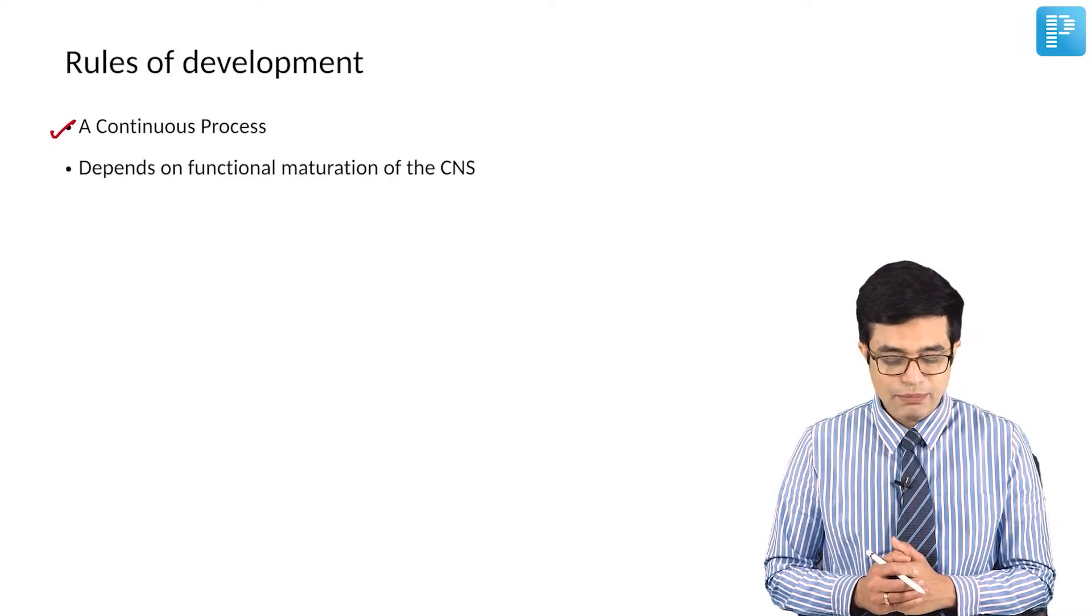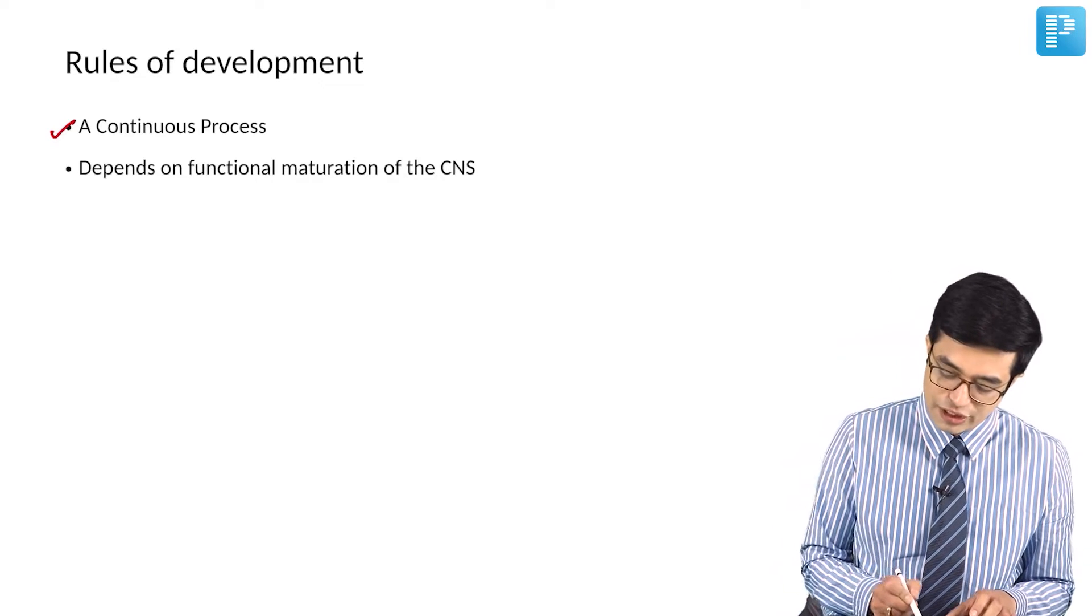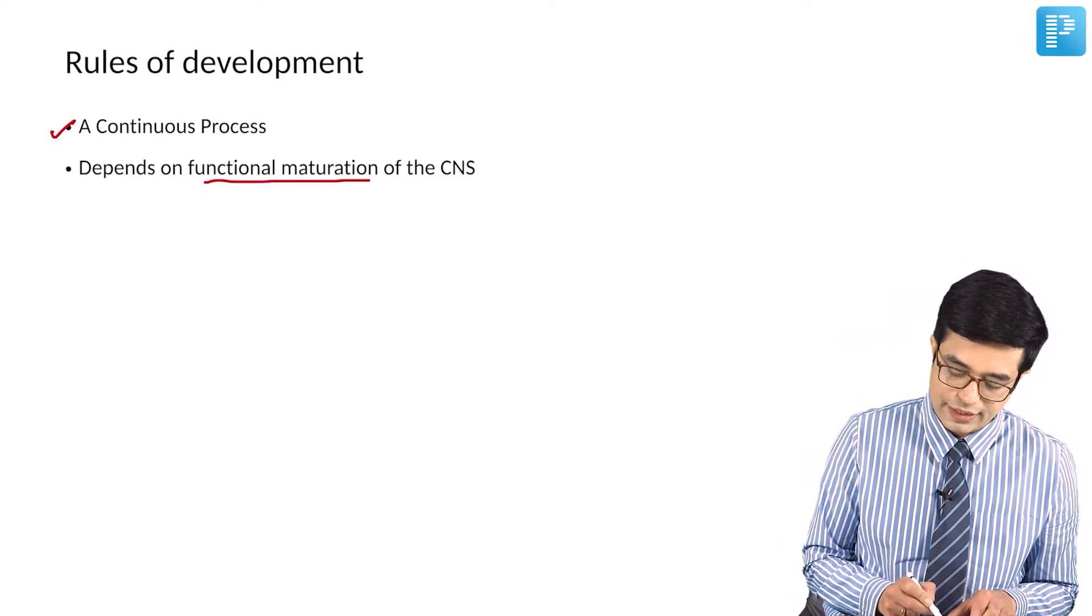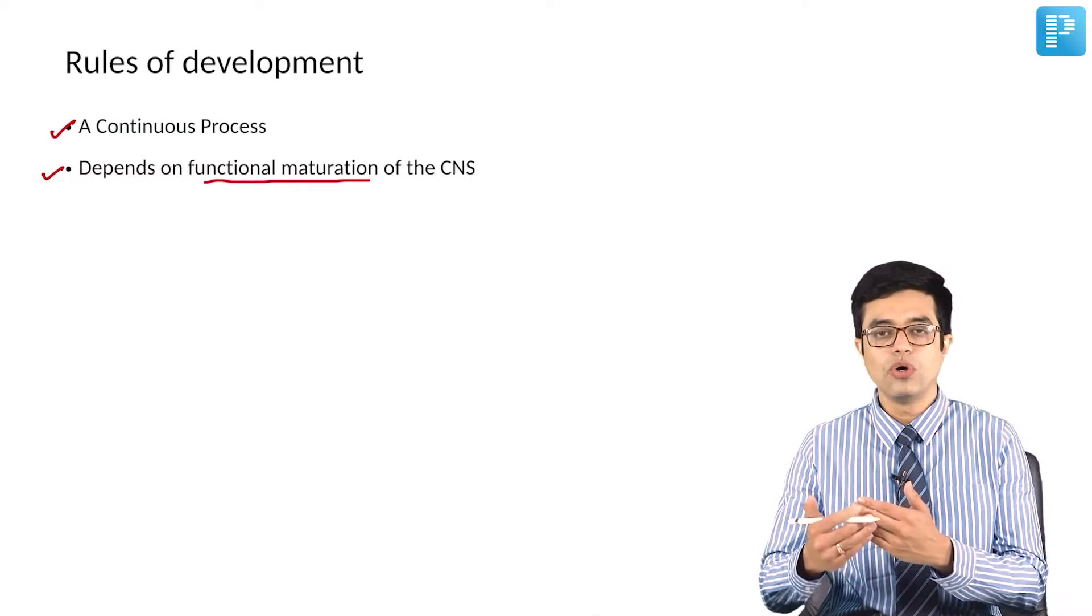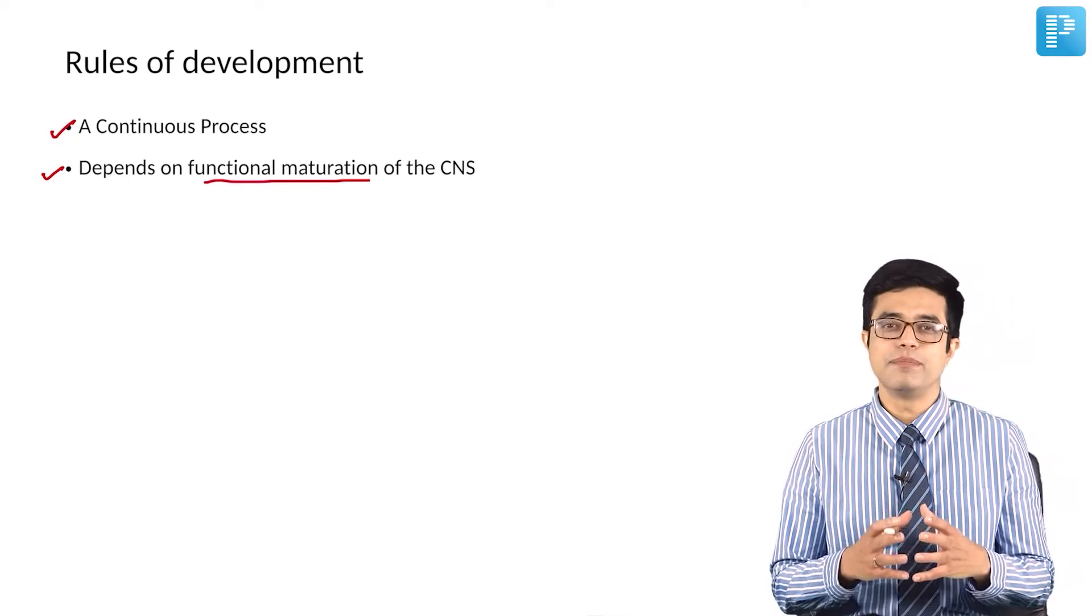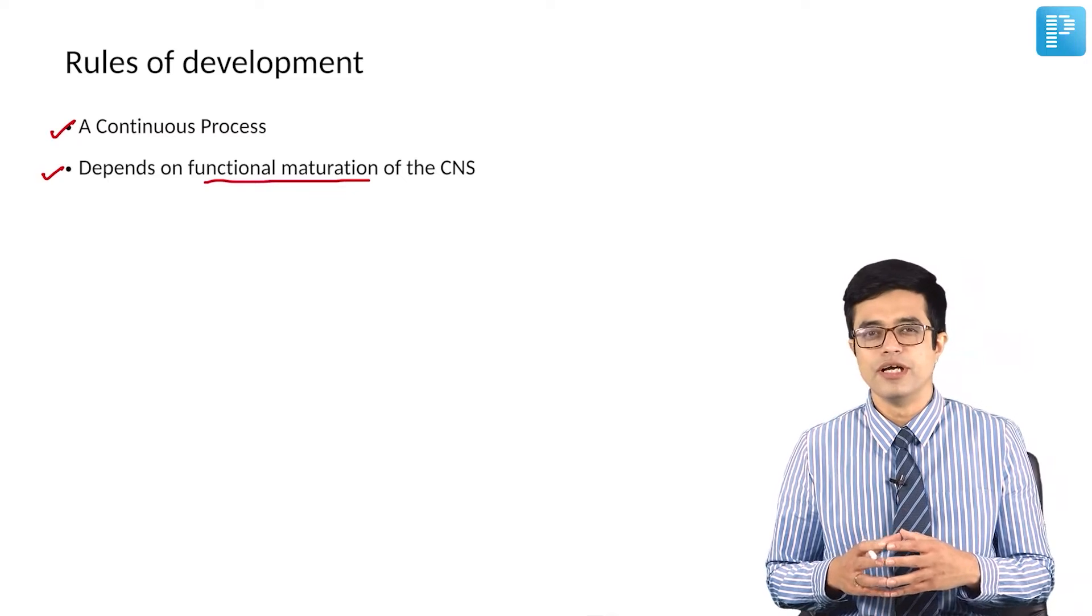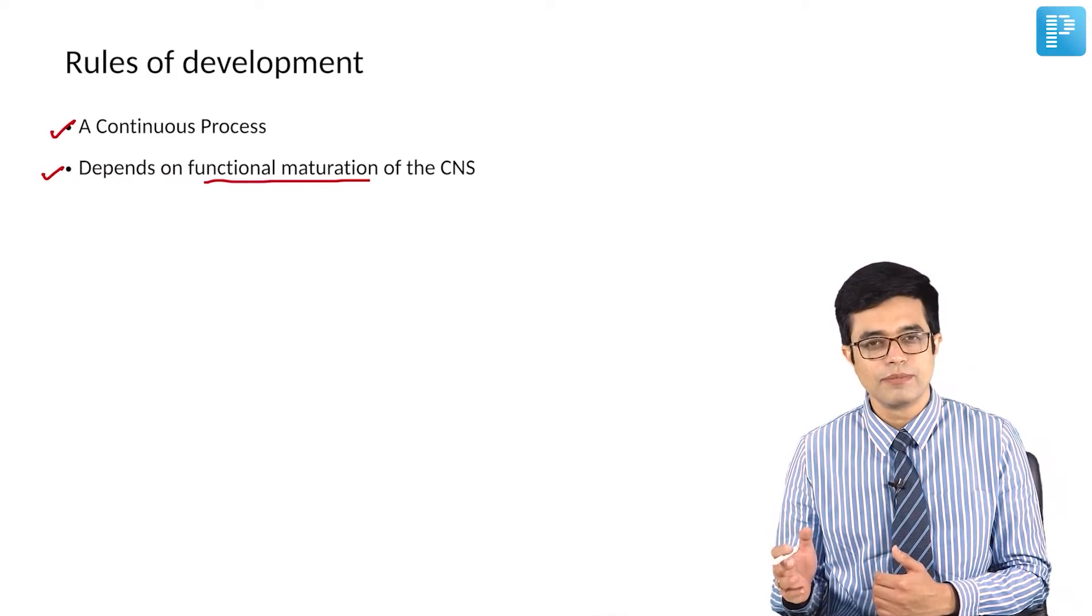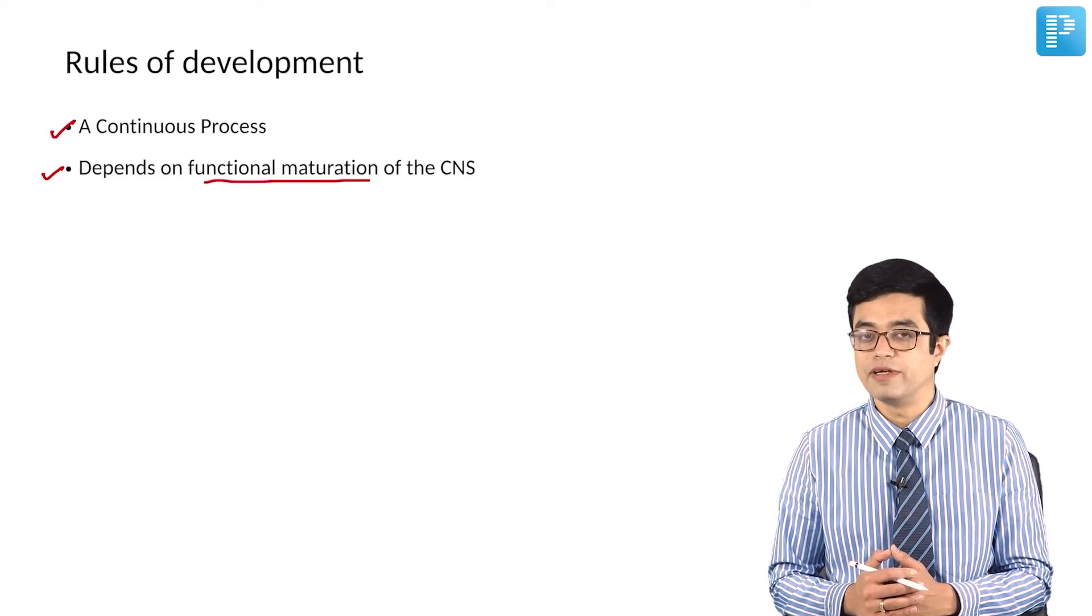Second is development depends upon the functional maturation of the CNS. How fast and how slow the CNS is maturing, it depends upon the functional maturation. Children who will have any CNS problem obviously they will be prone to developmental delays.